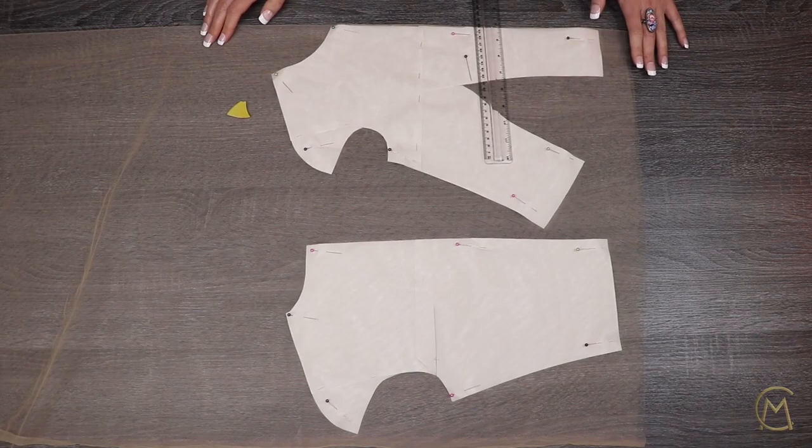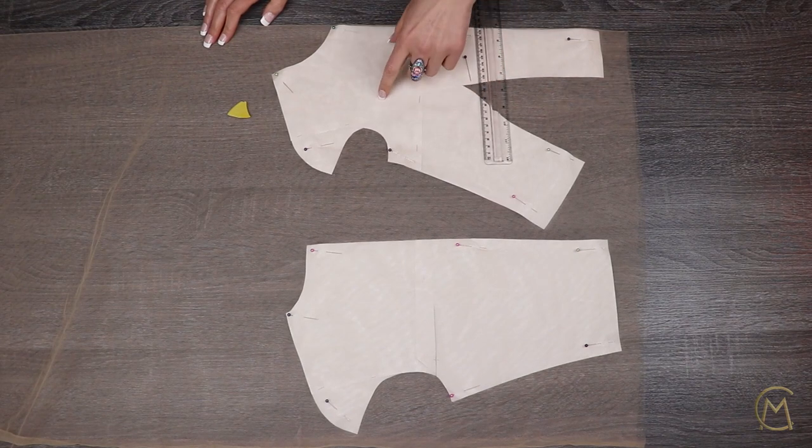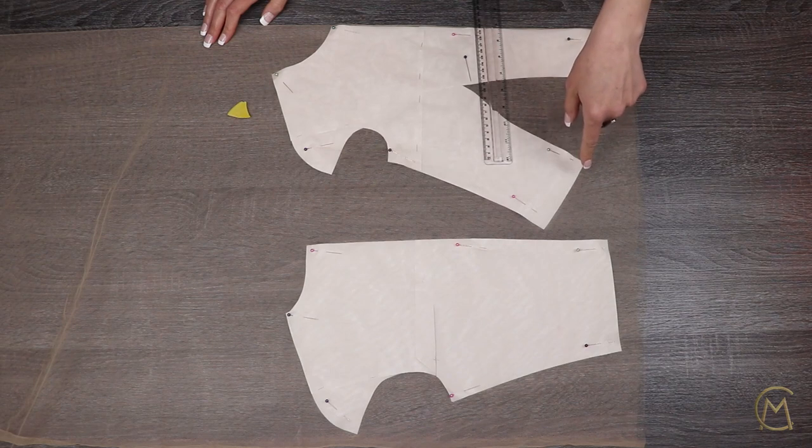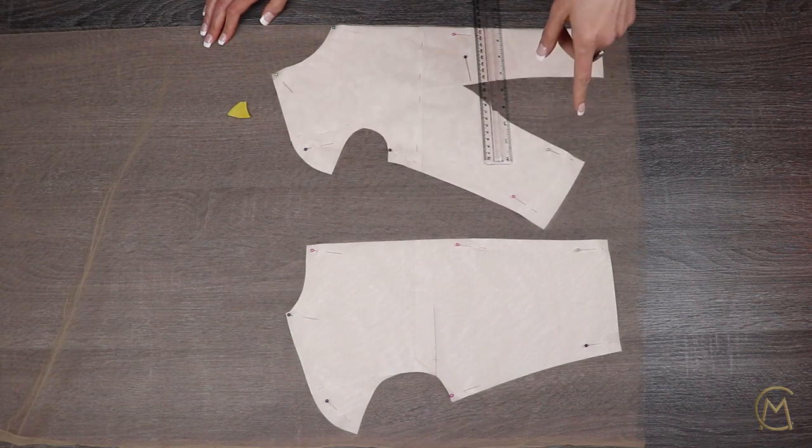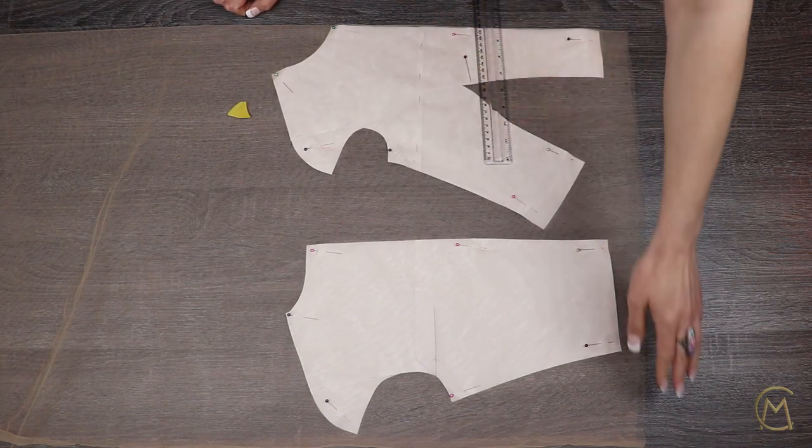I will be using a pre-cut pattern that has been cut to size 02. So here is the pattern in size 02. The waist is 66 centimeters and the bust is 80 centimeters.